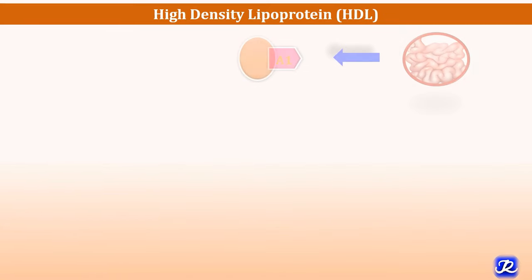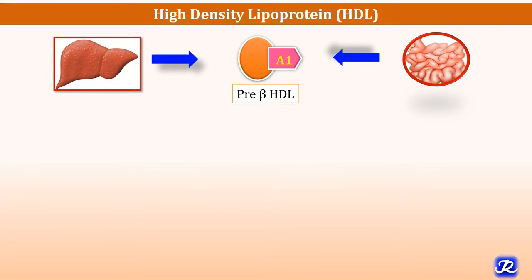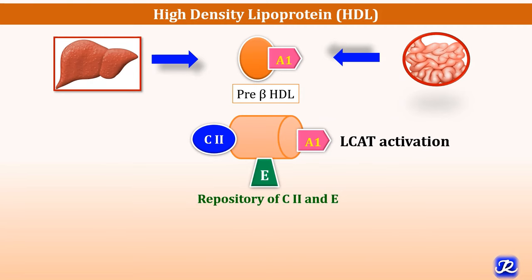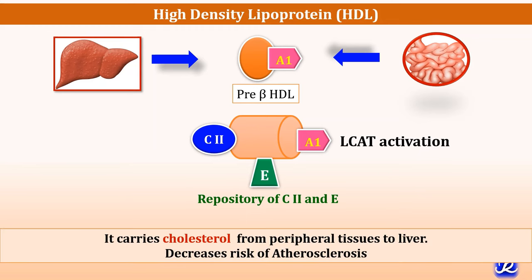High density lipoprotein (HDL) is synthesized from both the intestine and liver as a lipid-poor molecule — ApoA1 — also called pre-beta HDL. It then becomes discoidal, acquiring ApoC2 and ApoE along with ApoA1, and finally becomes spherical in shape as mature HDL. ApoA1 activates the enzyme LCAT (lecithin cholesterol acyltransferase). HDL is a repository of ApoC2 and ApoE. Its function is to carry cholesterol from peripheral tissues to the liver, decreasing the risk of atherosclerosis, which is why it is called good cholesterol.